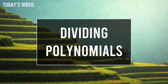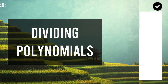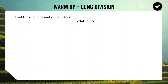We're looking at my preferred method of dividing one polynomial by another. But before we do that we need to do a quick refresh of how to do long division with numbers, because then this might make a little bit more sense. So for our warm-up question we're going to find the quotient and remainder of 2048 divided by 15. My process for doing long division is called the DMS Drop.